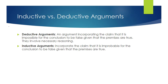Inductive arguments incorporate the claim that it's improbable for the conclusion to be false given that the premises are true. Inductive arguments are about prediction, analogy, generalization, authority, signs, or causal inference — they're about arguing what's probably going to be true. For example: so far we have not discovered any unicorns in the world, so probably there aren't any. That's an inductive argument based on probability.